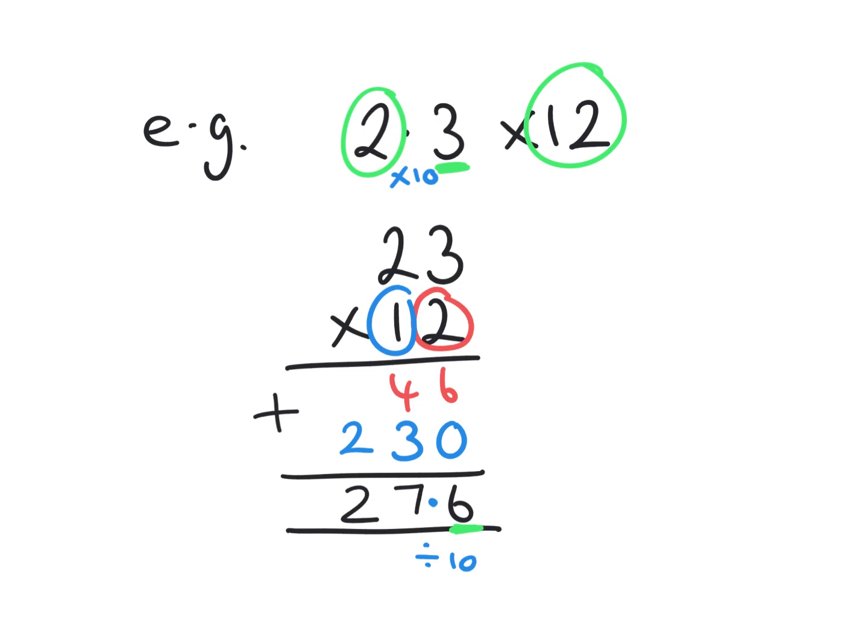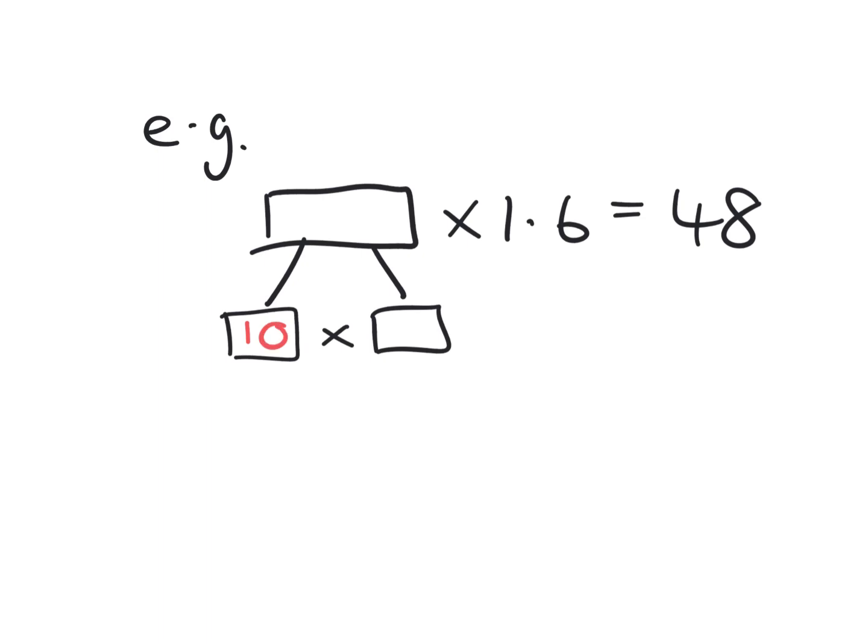Our last variety of question comes down to missing values: something times 1.6 gives us 48. So like with the previous questions, we're looking at a value here multiplied by 1.6 equals 48. The first thing we're going to do is multiply that 1.6 by 10, which gives us 16. Now, how many 16s do we need to make 48? Well, that's going to be 3. So 10 times 3 is 30, and there's our missing multiple of 10.